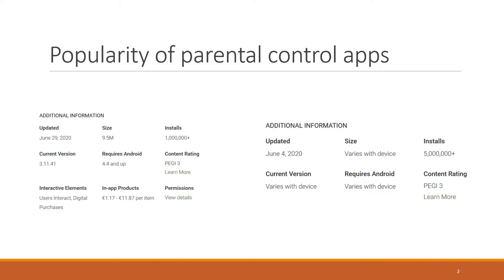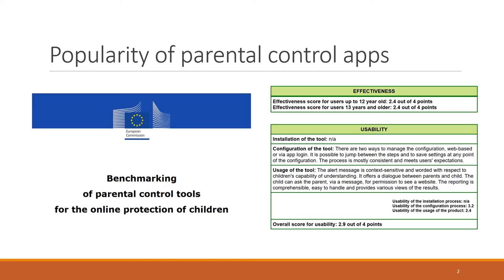Parental control applications are in fact popular. These are two examples taken from applications in our dataset, in which we look at their Google Play profile for the number of installs. We can see that one of them has been installed over a million times, while the other has been installed on over five million devices. Not only that, but even the European Commission came up with a benchmarking of parental control tools, meant to help parents decide which parental control solution to use. They give a rating to these applications.